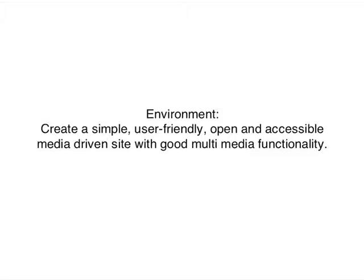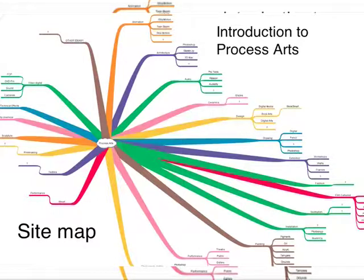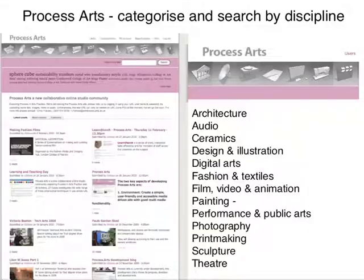That goes along with being able to upload videos, text, images, and stuff like that. One of the first problems of approaching process was how to actually break it down and how to categorize things, because it could potentially be huge, trying to encompass every single process that goes on in art practice. What we eventually did was, from this mind map — which you probably can't see — we whittled it down to core areas.